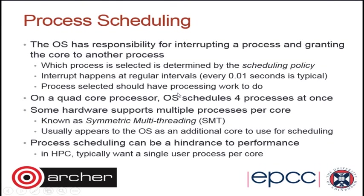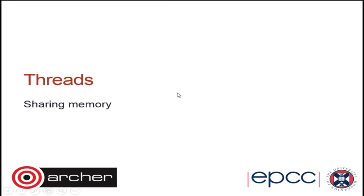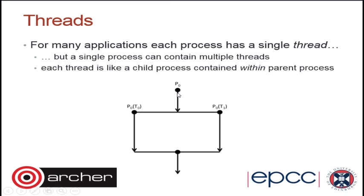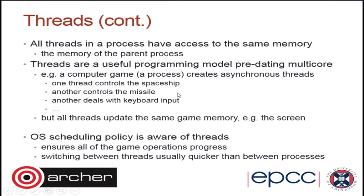The other unit of work the OS has is the thread. Threads are created and managed by a single process, and because they live inside that process they have access to its memory space. This means you can create multiple workers for a program and they can all see the same data. You can have one data structure and all eight workers can work on different bits of it, making it easy to parallelize.